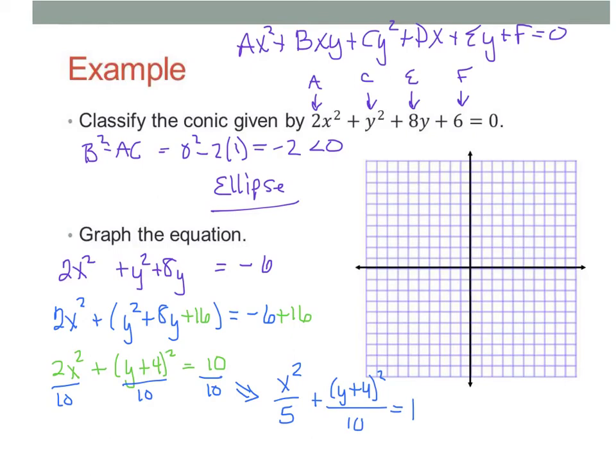And what we get is x squared over 5 plus y plus 4 squared over 10 equals 1. So, there we go. We now have this in a form that we're used to graphing from. So, to graph it, we're going to look at our center first. Because there's not another number with the x. So, our center is going to be 0, that's with the x, negative 4. So, we're going to start at 0, negative 4.